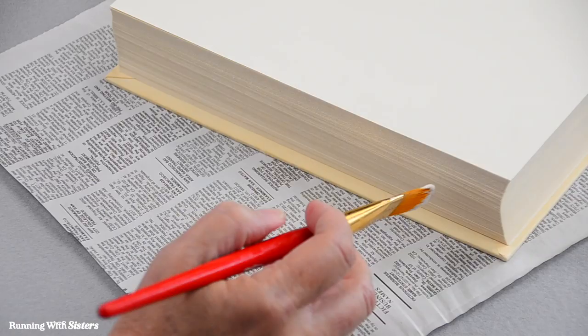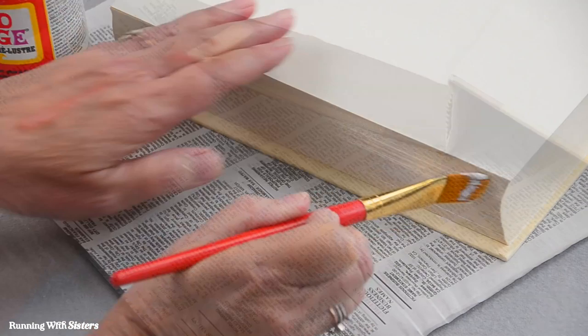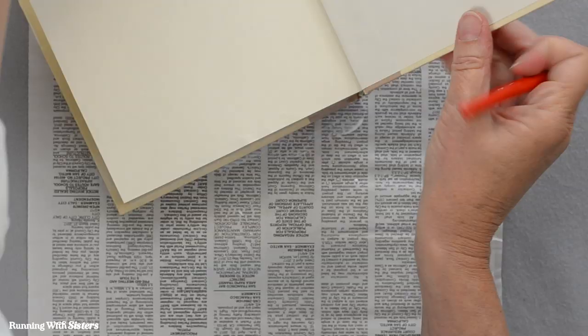I'm just going to do a thick coat. I'm wanting this thick coat of Mod Podge to really glue those pages together. So we're ready to let that dry, but before I close the book up I am going to remove this newspaper which has glue on it.